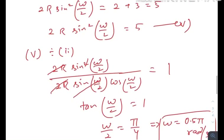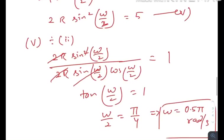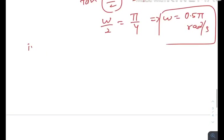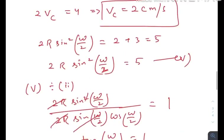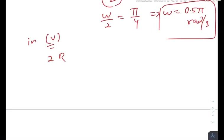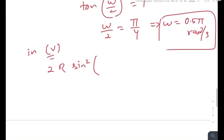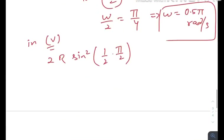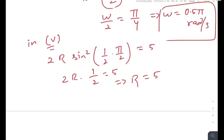Now substituting ω = π/2 into equation 5: 2R·sin²(π/4) = 5. Since sin(π/4) = 1/√2, sin²(π/4) = 1/2. So 2R·(1/2) = 5, which gives R = 5 cm. That is our third answer.